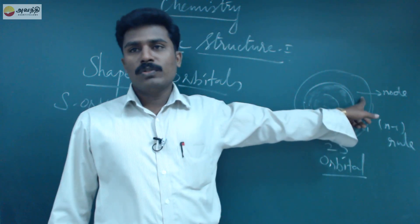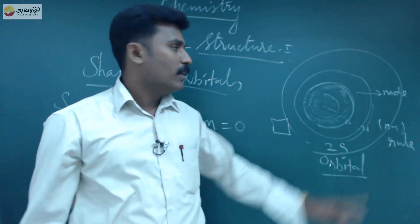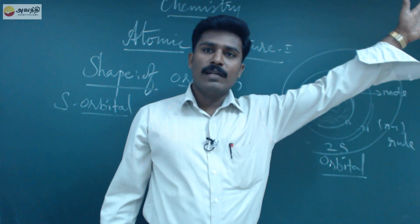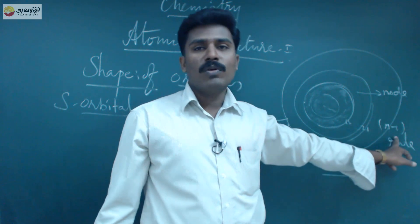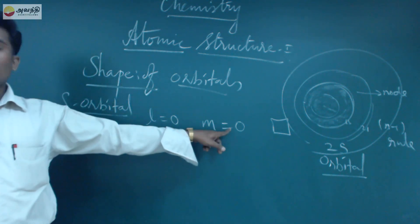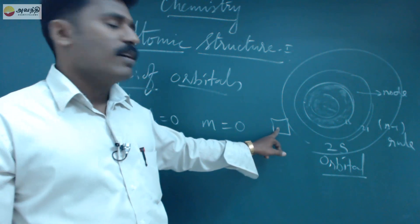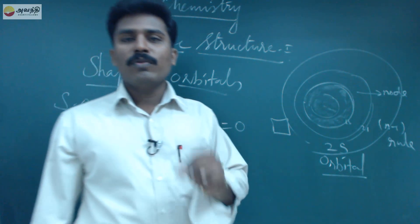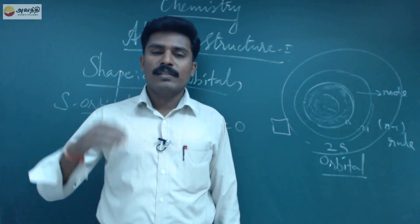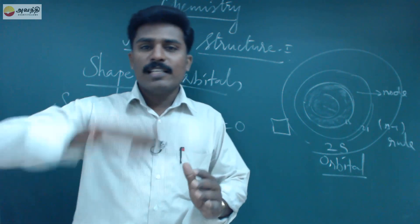For 2s orbital there is one node. If it is 3s, there are two nodes. If it is 4s, 4 minus 1 equals 3 nodes. If it is 10s, there are 9 nodes. The common formula is n minus 1 rule. For s orbital, l value is zero and m value is also zero, so there is no orientation. The number of nodes is n minus 1. The shape is symmetrically spherical.